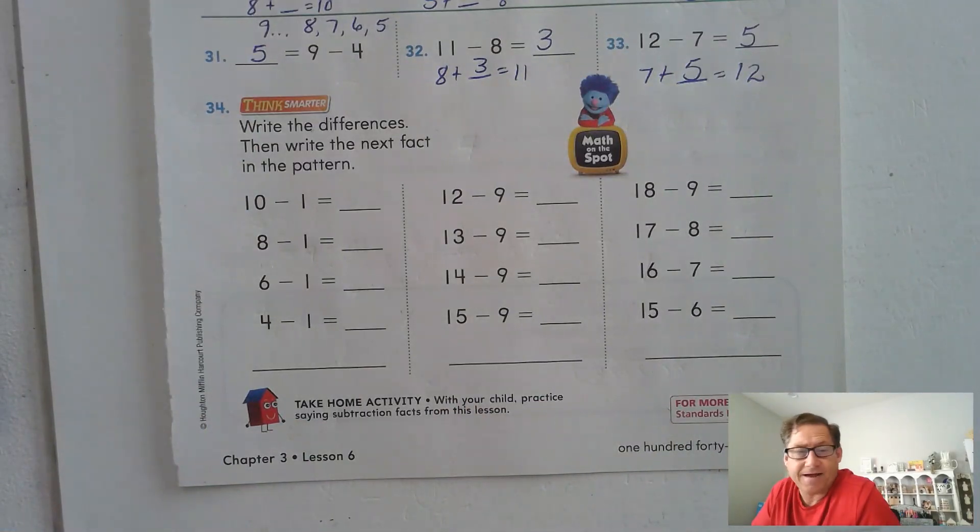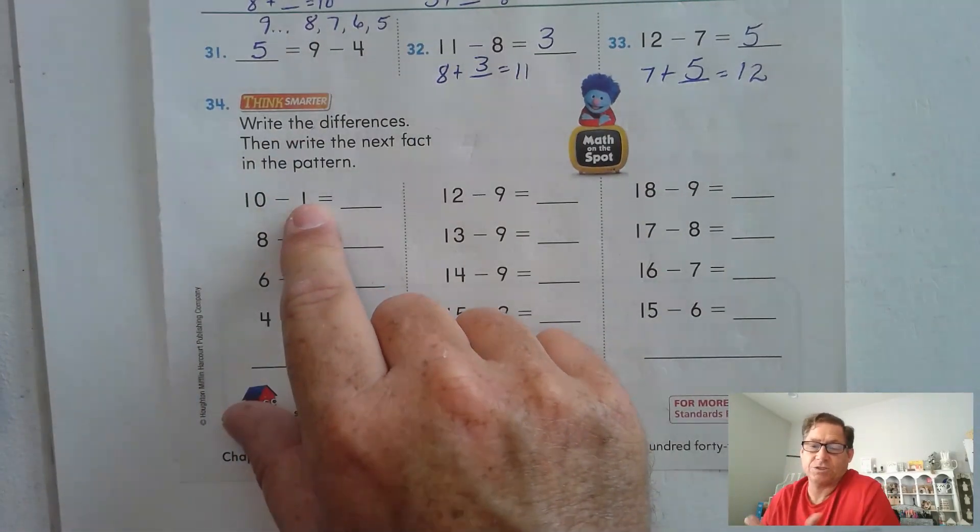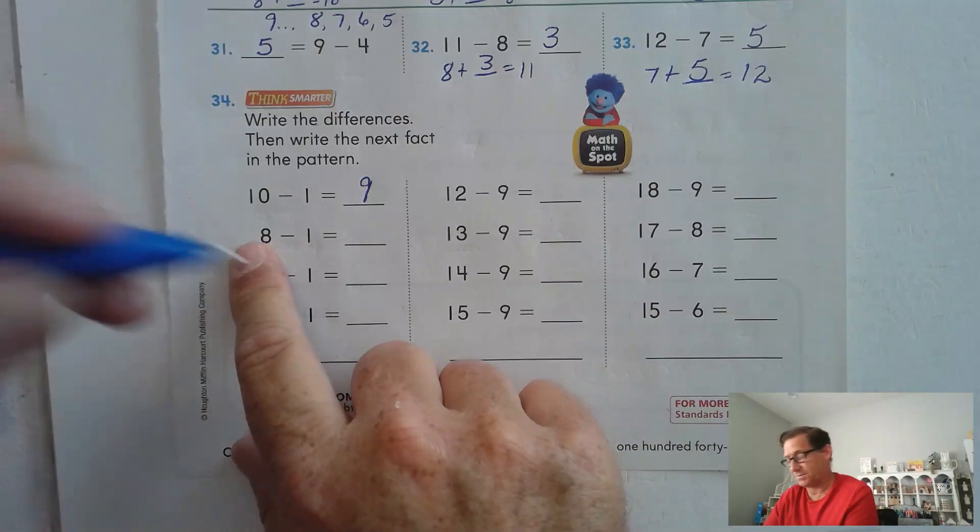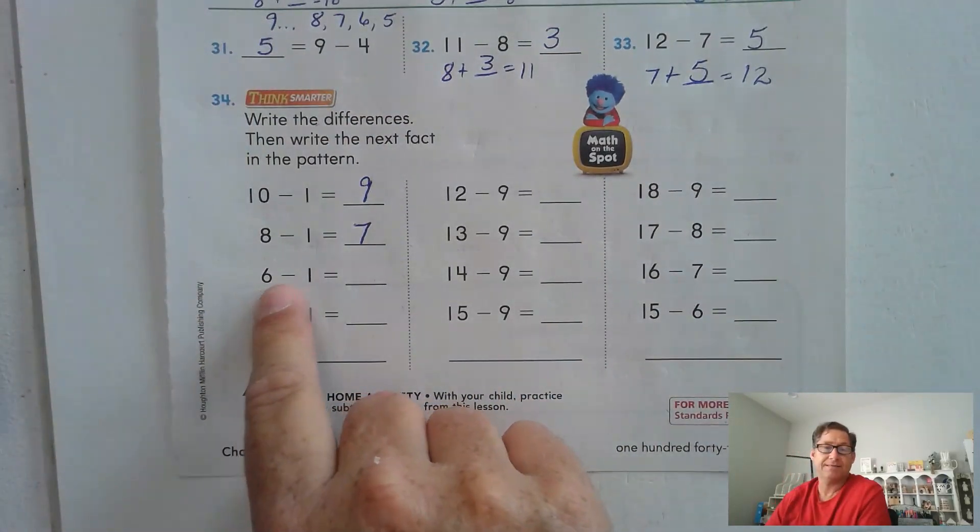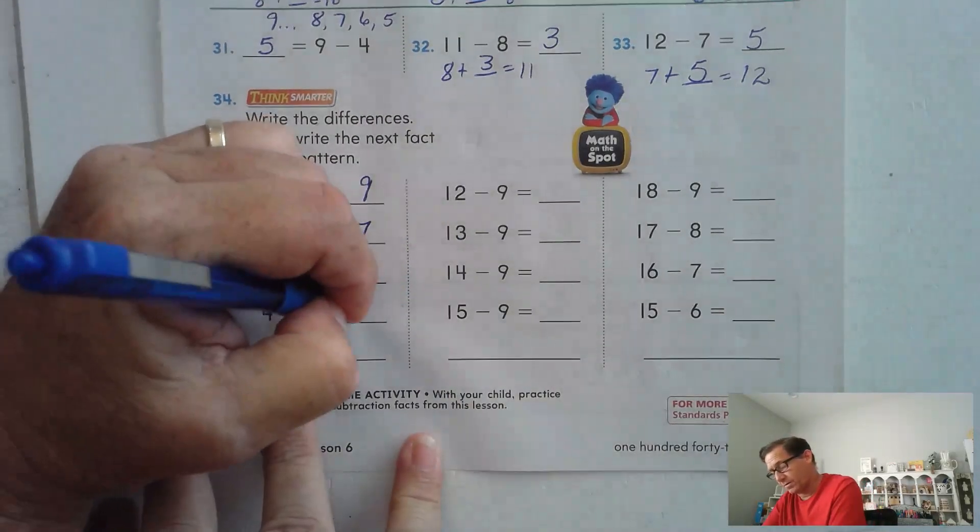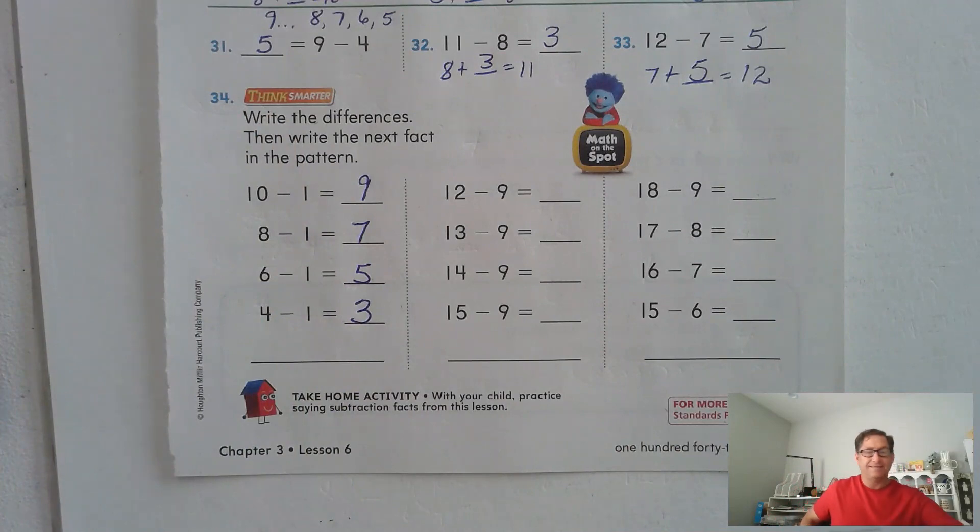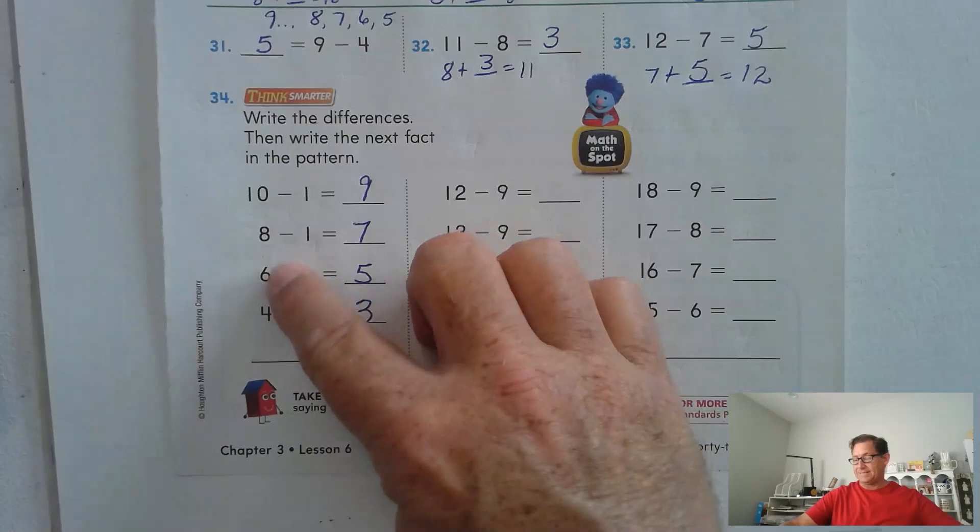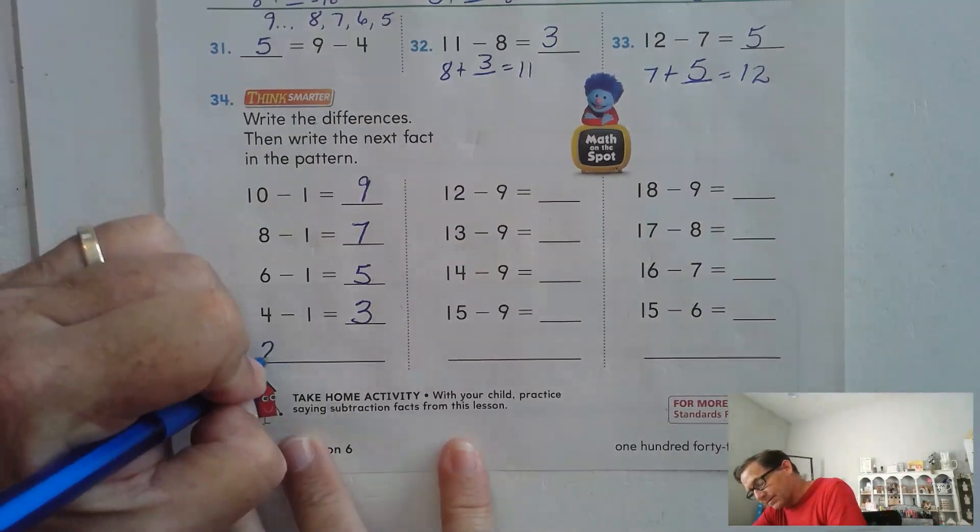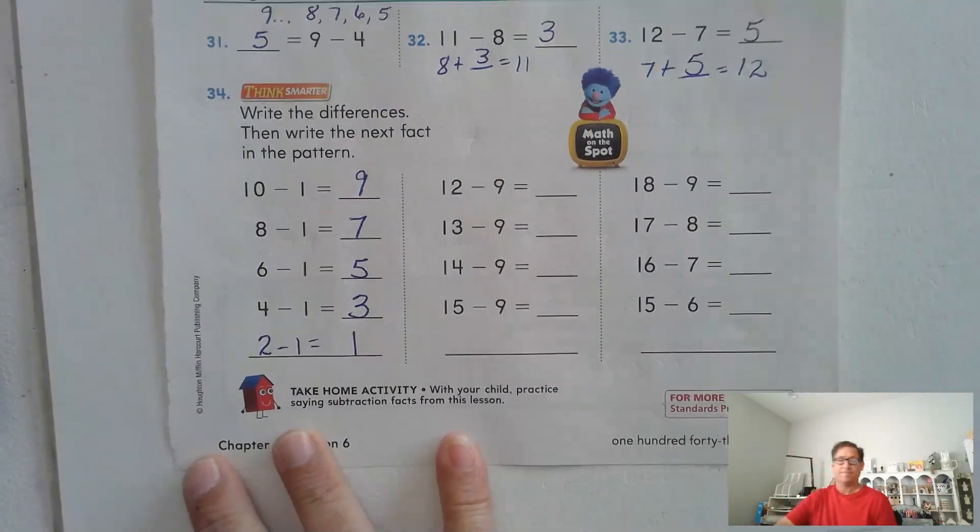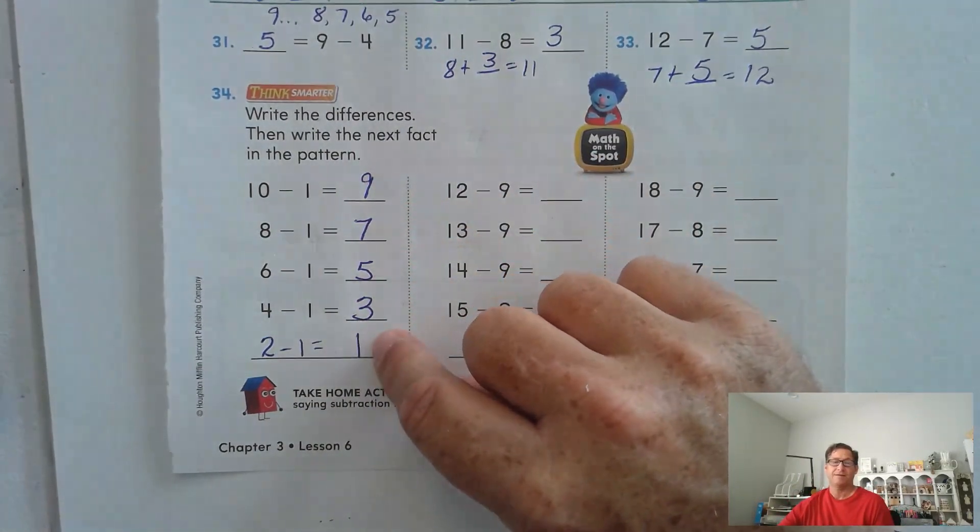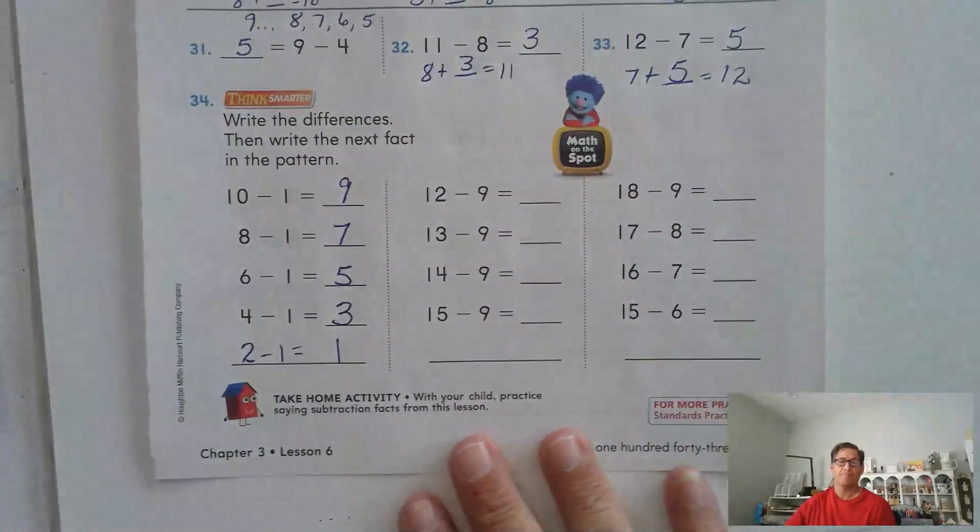Write the differences and write the next fact in the pattern. 10 take away 1, so just what's the previous number. What number comes before 10? 9. 8 take away 1, what number comes before 8? 7. 6 take away 1, what number comes before 6? 5. 4 take away 1, what number comes before 4? 3. What's the next fact in the pattern? Let's look at the pattern: 10, 8, 6, 4. So wouldn't it be 2 minus 1? 2 minus 1 equals 1. So does that follow the pattern? 9, 7, 5, 3, 1. Yeah, these are odd numbers decreasing by 2.